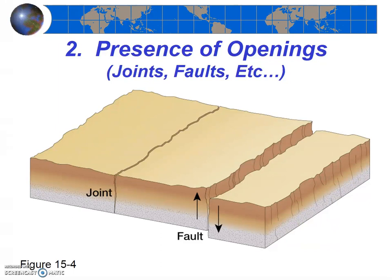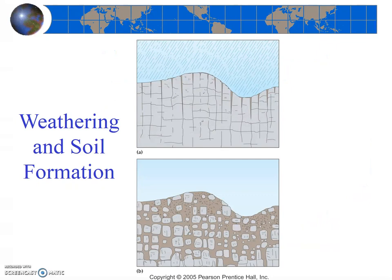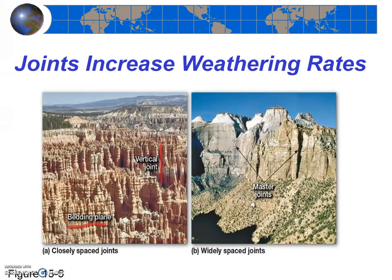More openings also likely means more root wedging, and if the climate is right, more frost wedging. Additionally, joints and other openings can allow weathering to occur much deeper than it would otherwise occur. Notably, this is how soil formation begins, and how soil formation can actually begin to occur well below the surface. Joints are the most important type of openings in rocks, and joints are commonly present in all rock types.